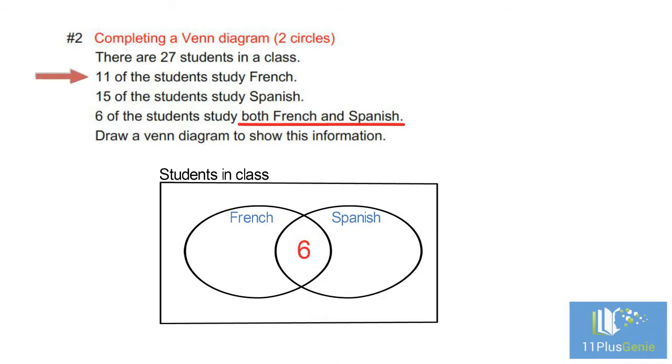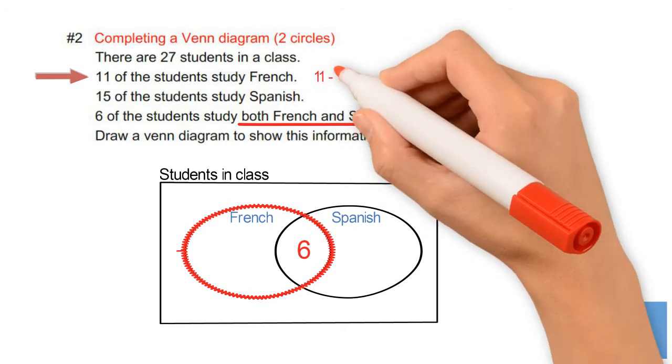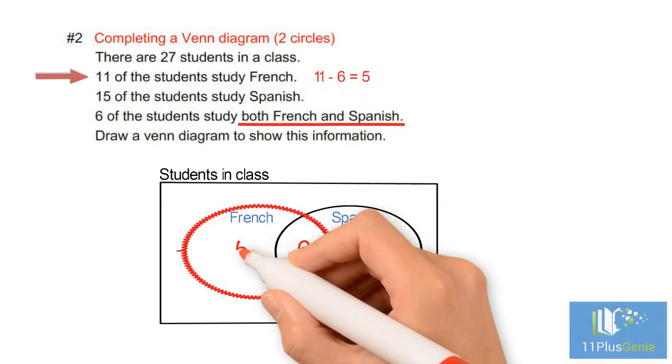11 students study French. In the French circle there must be a total of 11. 6 of these 11 students are already in the French circle. To have a total of 11 students, we need to add 5 students who study only French.